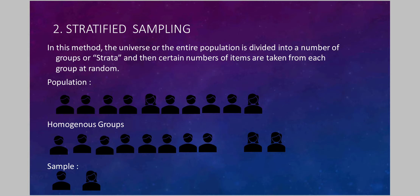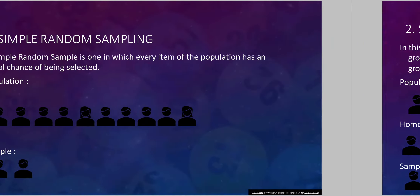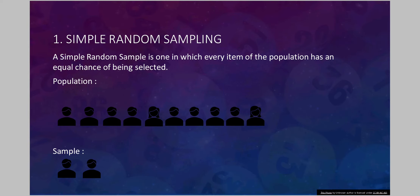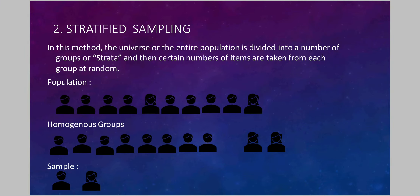In order to overcome this problem, there is another method known as stratified sampling. In this method, we make groups on the basis of a common characteristic and then draw a sample from each group. This method overcomes the demerit of simple random sampling in which minority groups can be left behind. As you can see here, we draw samples from two different groups — one group of males and one group of females — so both groups get equal representation.